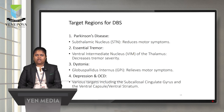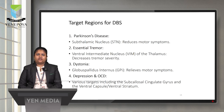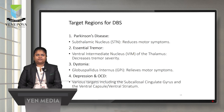The target regions for Deep Brain Stimulation vary by condition: for Parkinson's disease, the subthalamic nucleus is targeted to reduce motor symptoms. For essential tremors, the ventral intermediate nucleus of the thalamus is targeted to decrease tremor severity. For dystonia, the globus pallidus internus is targeted to relieve motor symptoms. For depression and OCD, various targets include the subcallosal cingulate gyrus and the ventral capsule or ventral striatum.